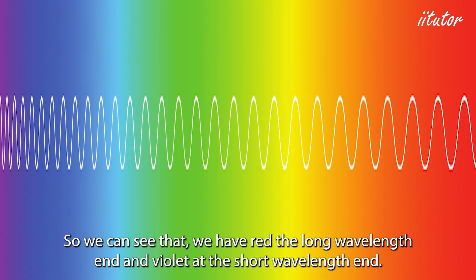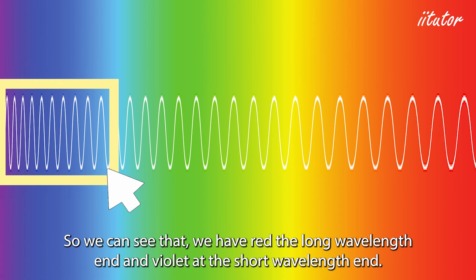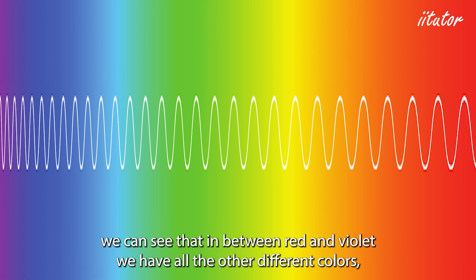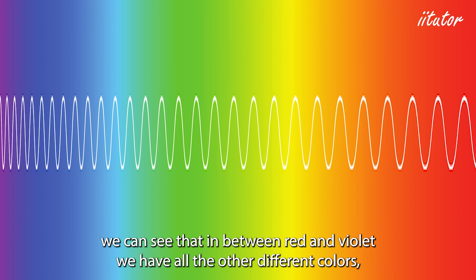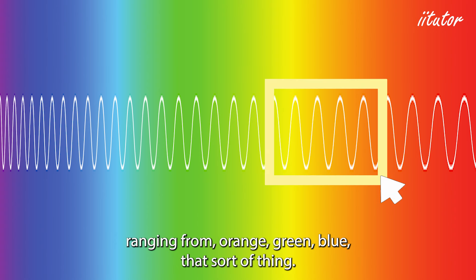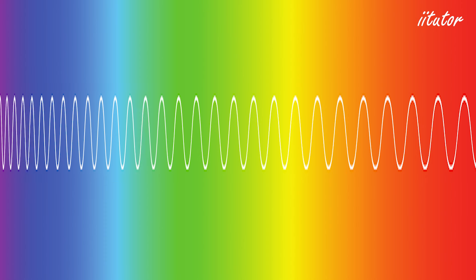We can see that red is at the long wavelength end and violet at the short wavelength end. In between red and violet we have all the other different colors, ranging from orange, green, blue, and so on.